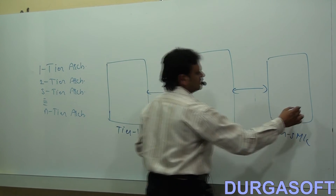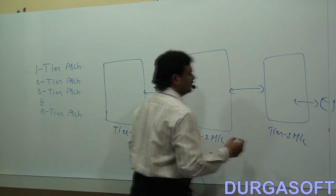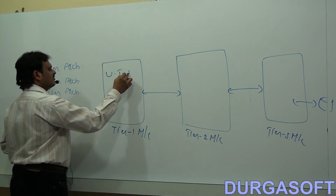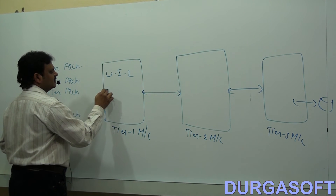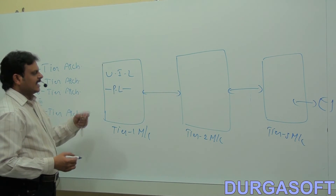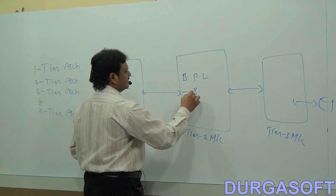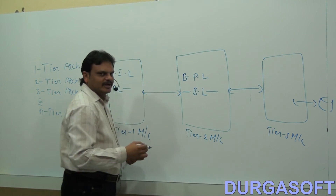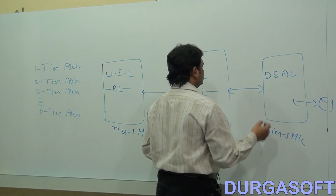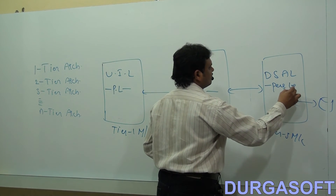This tier three machine will interact with the database. At tier one machine, we are able to provide the user interface layer — that means presentation logic. In tier two machine, we will provide the business processing layer — that means business logic. At tier three machine, we are able to provide the data storage and access layer — that means persistence logic.